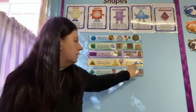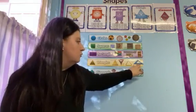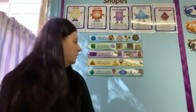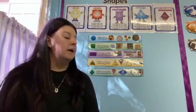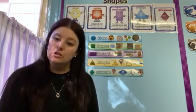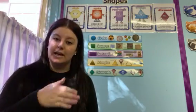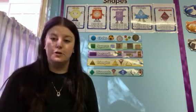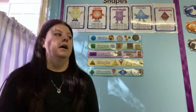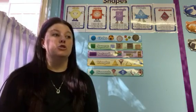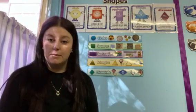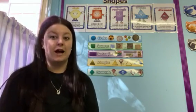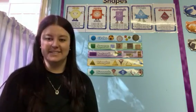Some things that you use when you're in big school will be a triangle shape. When Mommy makes you your sandwiches at school, she can cut them into a triangle shape for you. Some chocolates can come in triangle shapes. So just look out for your triangles at home.